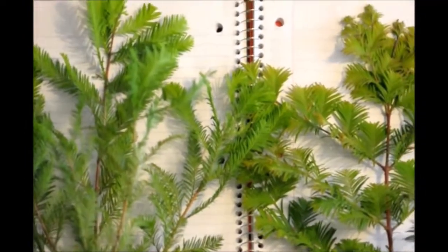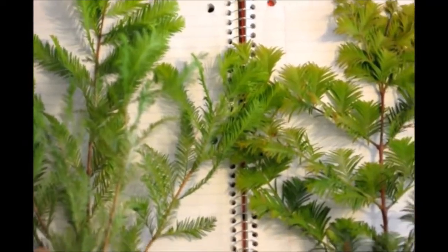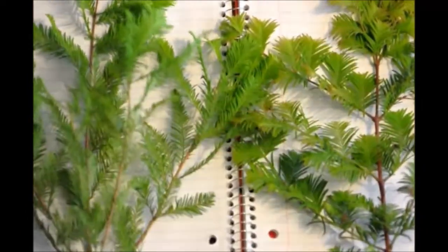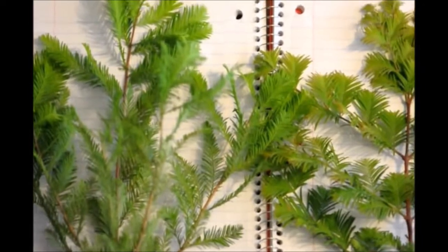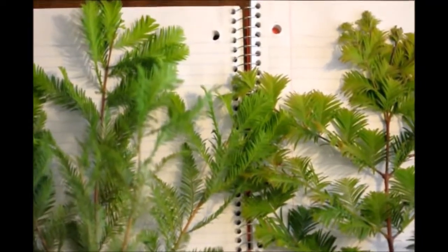First off, the similarities between the two are very much apparent. They both have green foliage and brown bark. They both are deciduous conifers, which means they have cones and lose their leaves in the wintertime.